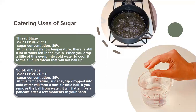The next stage is soft ball stage, which is at 112 degrees centigrade. Sugar concentration increases to 85%. At this temperature sugar syrup dropped into cold water will form a soft flexible ball. This is how we check the different stages by putting them into water. If you remove the ball from water it will flatten like a pancake after a few moments in your hand. That is why it is known as the soft ball stage.